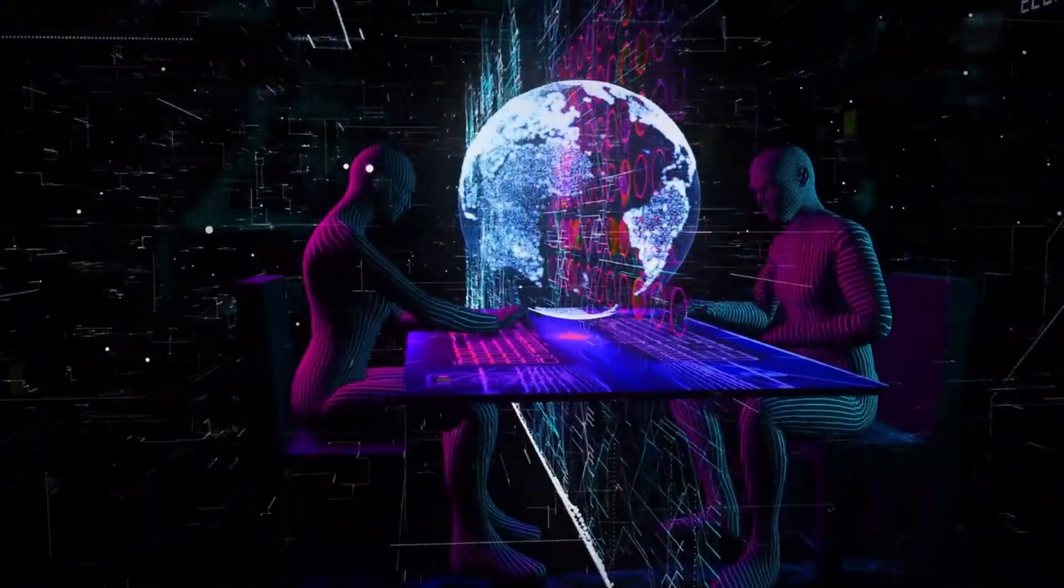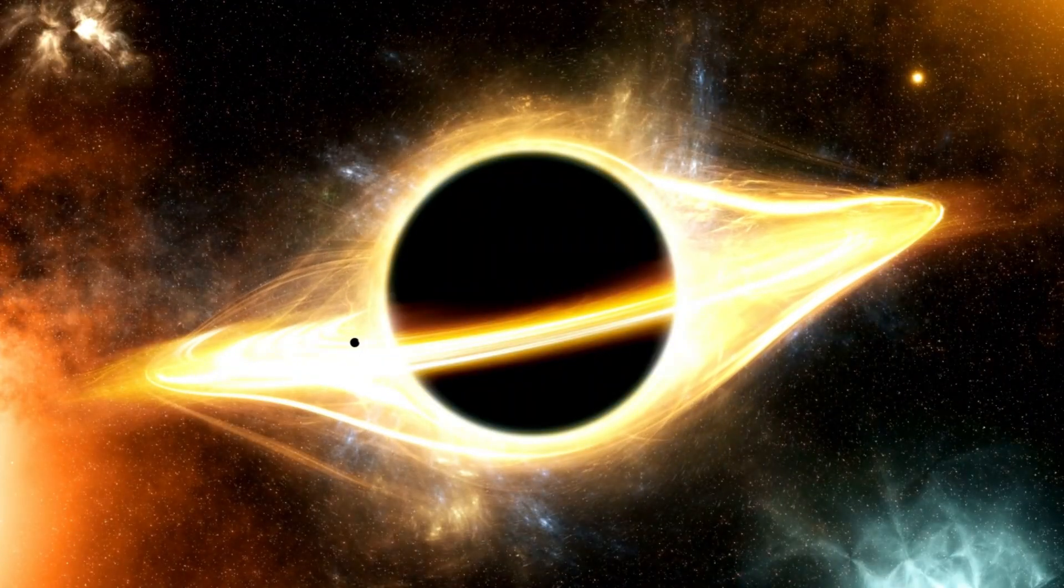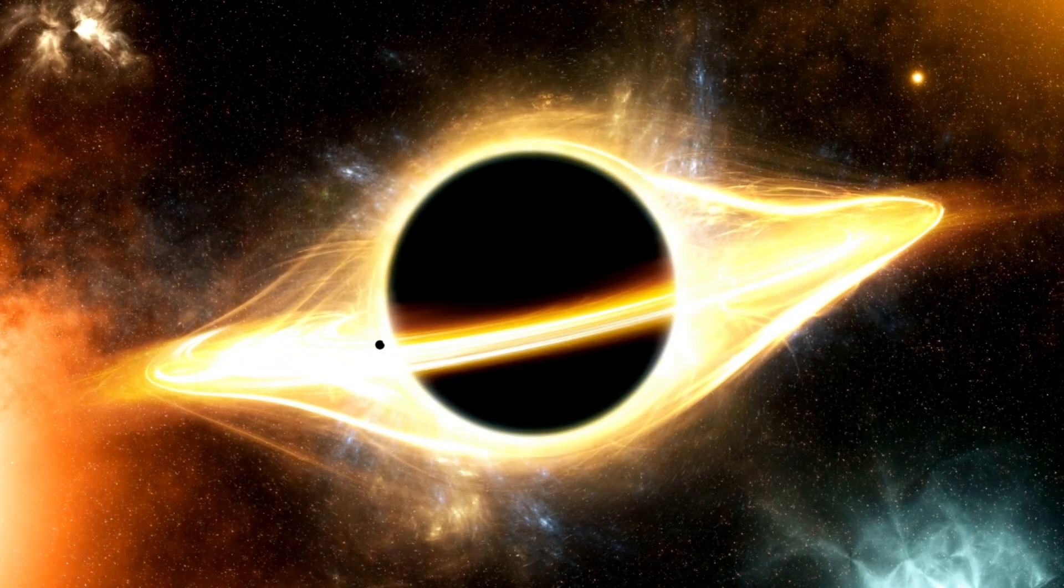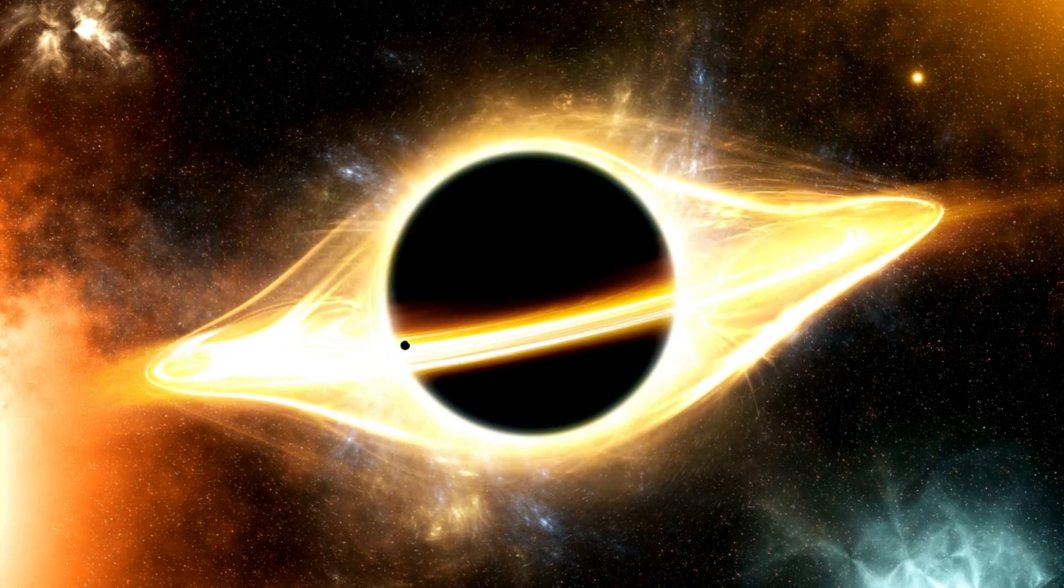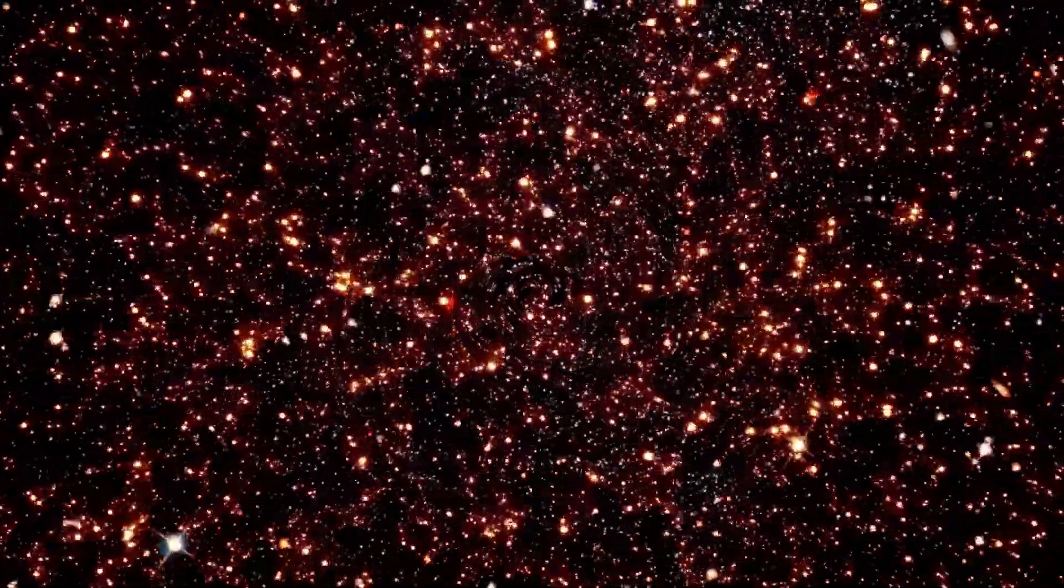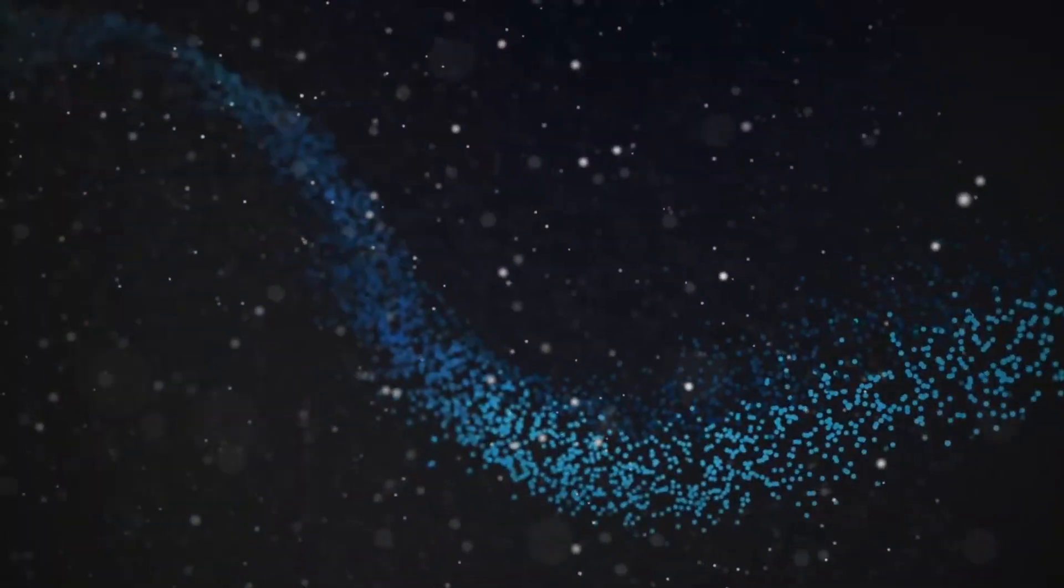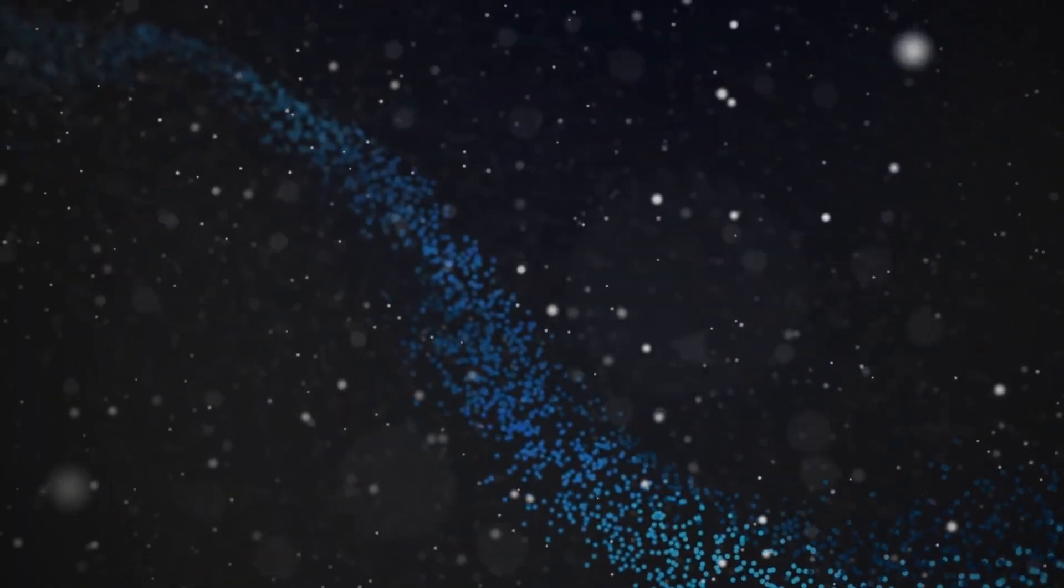Imagine our universe as a single bubble in a vast cosmic foam. Each bubble is a universe with its own physical laws, including its own version of time. In some of these universes, time might flow backward. In others, it might loop or branch like a tree.